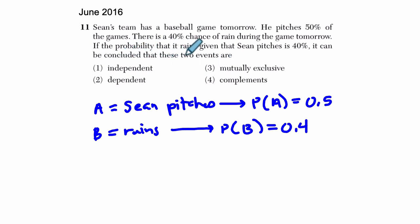If the probability that it rains given that Sean pitches is 40%, what is going on over there? Well that's saying the probability that it rains, so B, and in math we can say given that A has happened. In other words, it's raining given that Sean has pitched, and they're telling us that that probability is also 40%.